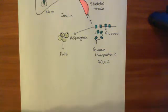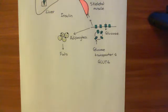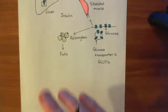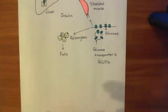Welcome to this next video in which we are discussing the insulin receptor. We've discussed the peripheral actions of insulin, and now we want to see how insulin actually achieves these effects by acting on insulin receptors on the surface of these three types of cells.